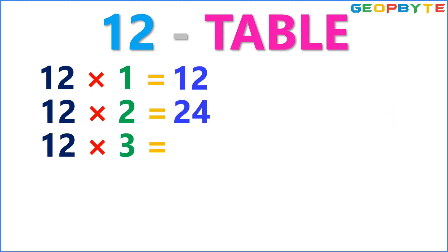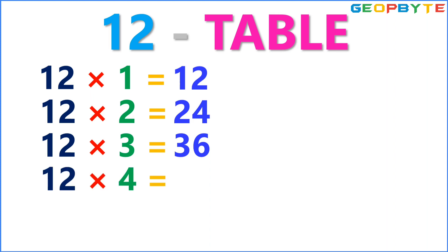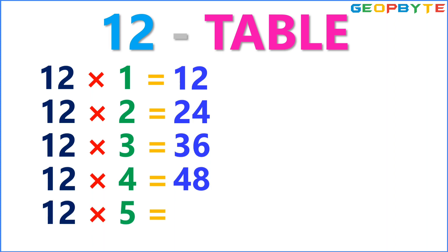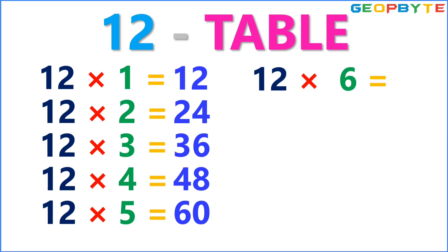12 threes are 36. 12 fours are 48. 12 fives are 60. 12 sixes are 72.